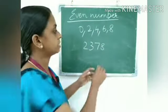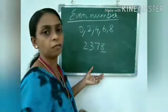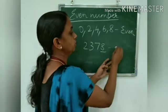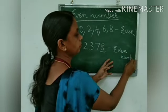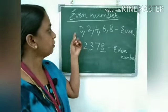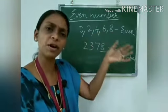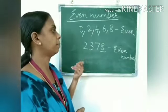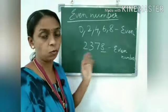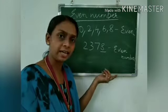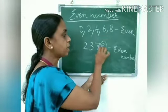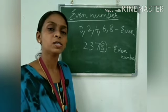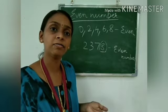For the number 2378, what is the digit in the ones place? The ones place digit is 8. Since 8 is one of 0, 2, 4, 6, 8, this is an even number. When 0, 2, 4, 6, or 8 appears in the ones place of a number, we call that number an even number. So 2378 is an even number because its ones place is 8.